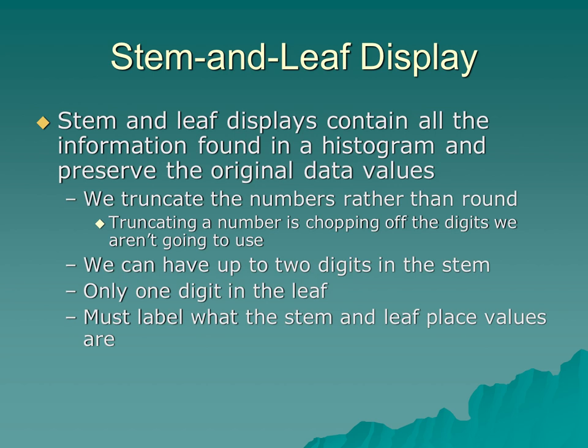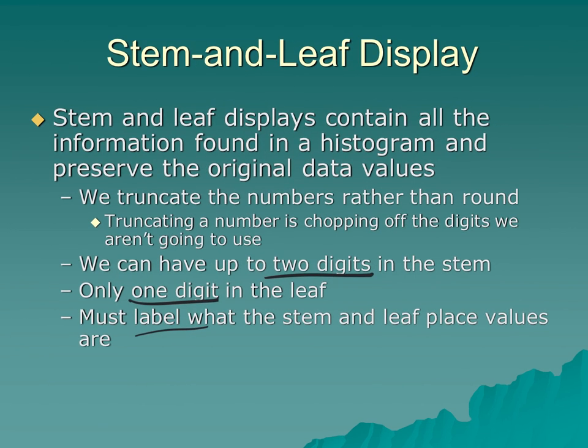When we are picking the numbers, we don't round them because remember in a histogram, we're keeping things in an interval like 10 to 20. So if we round up, we're moving it out of that. Instead of rounding, we do what's called truncate, which we just chop off the rest of the values. We can have up to two digits in the stem, but only one digit in the leaf. There are no commas or lines to separate the different numbers in the leaf, and we have to make sure to label what the place values are.